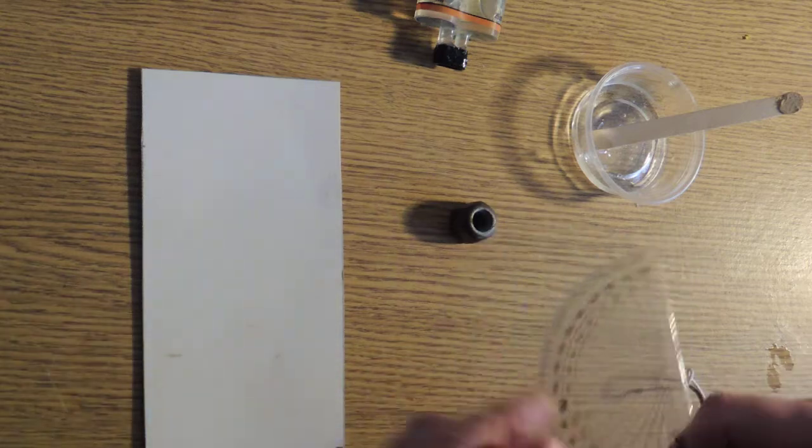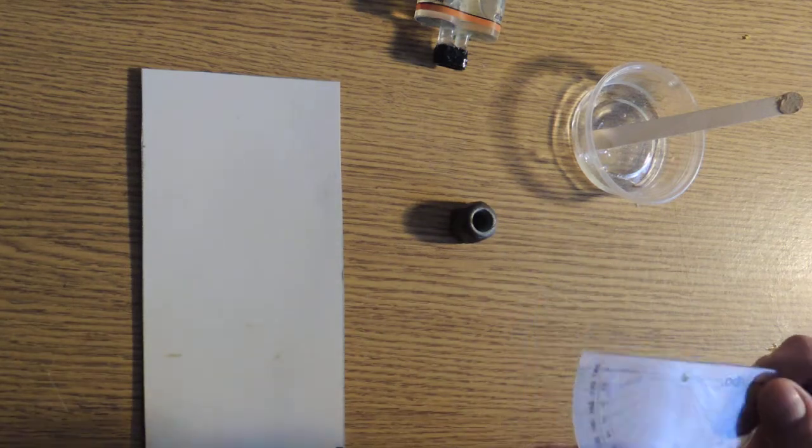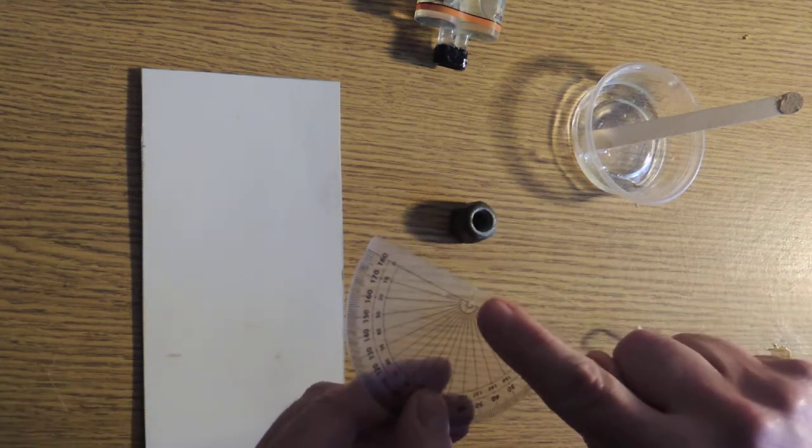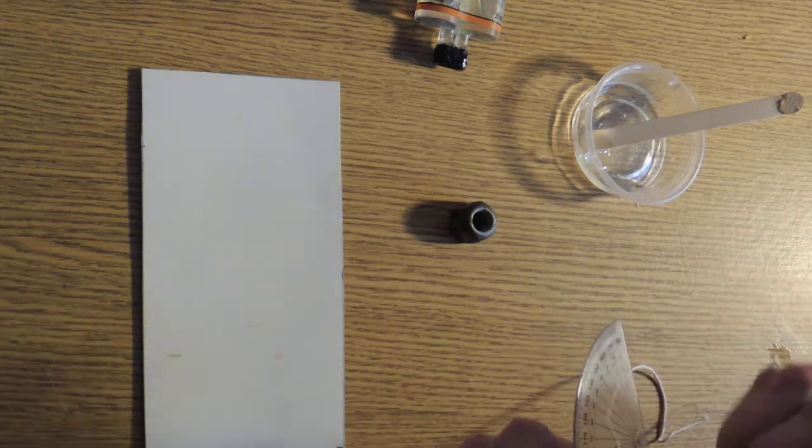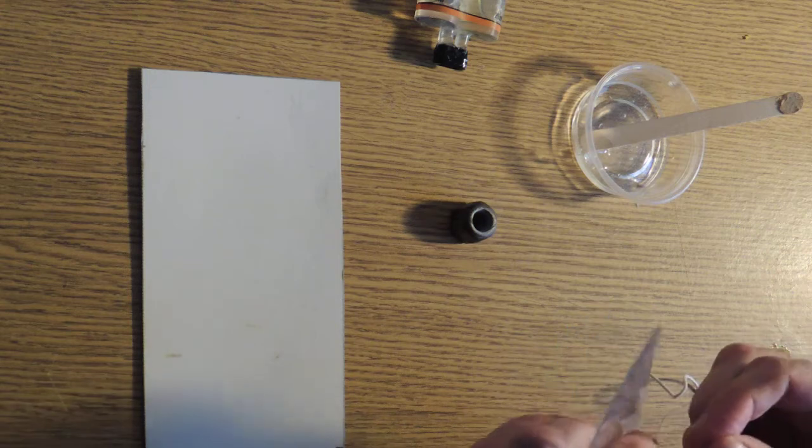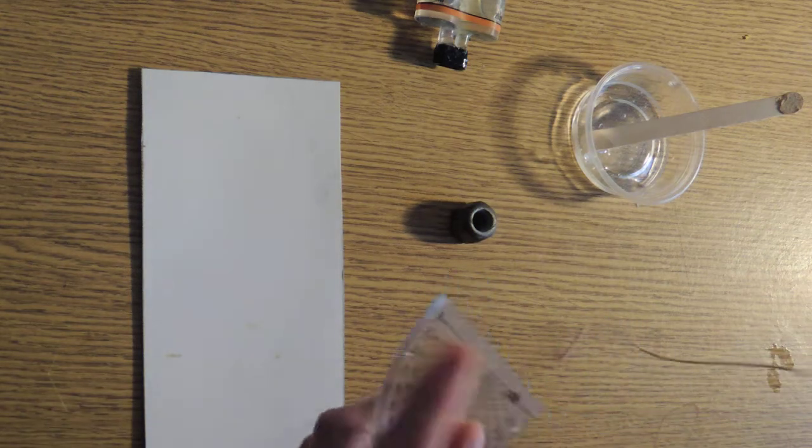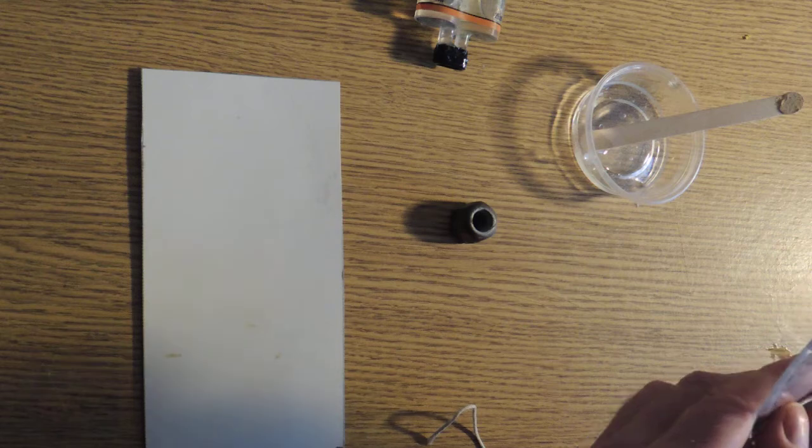Now, I've made a little hole, I hope you can see that, in the protractor. I've made a hole. You can use a compass to poke a hole maybe. If you can't do that without breaking it, then your string, you could just stick it with sellotape.